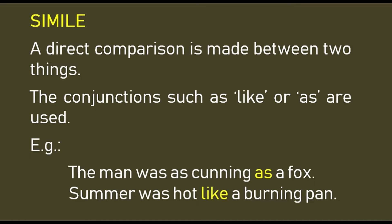Simile: a direct comparison is made between two things using the conjunctions 'like' or 'as'. For example, 'the man was as cunning as a fox' and 'summer was hot like a burning pain.' In these two examples, the man is compared to a fox and the summer is compared to burning pain using the conjunctions 'as' and 'like'.